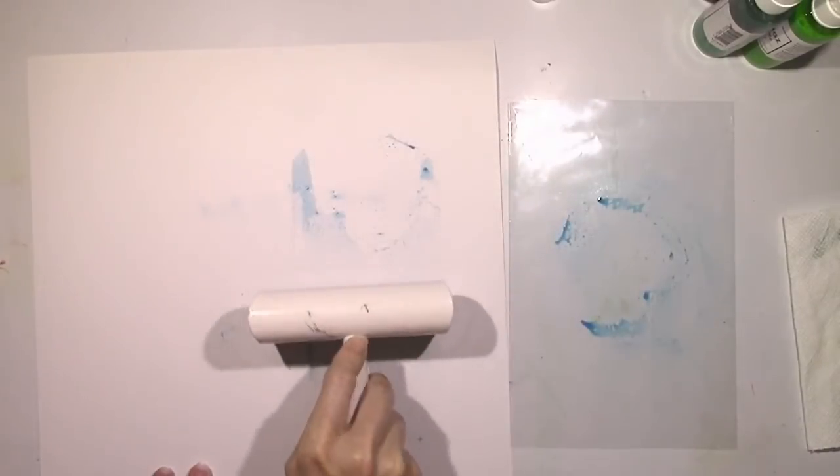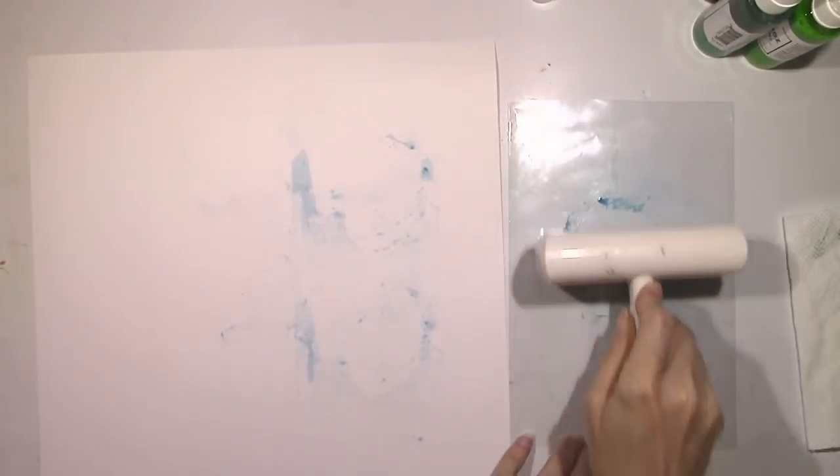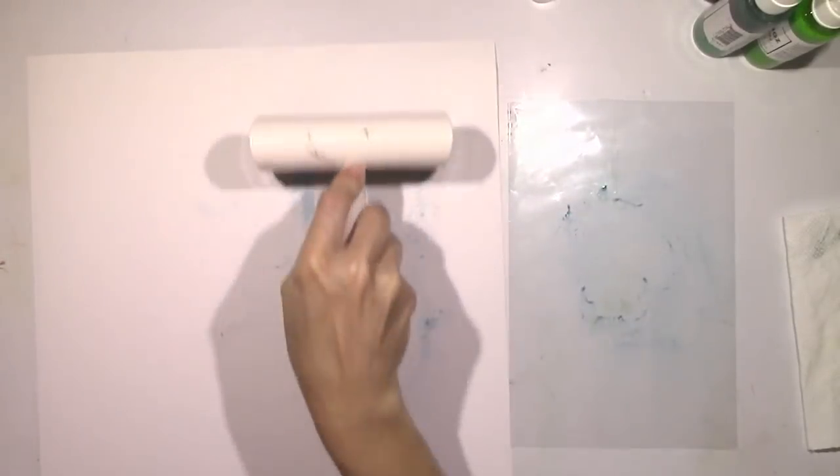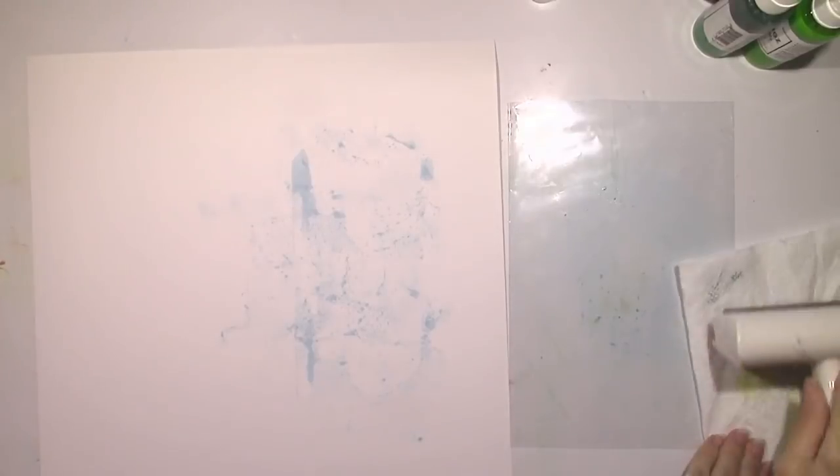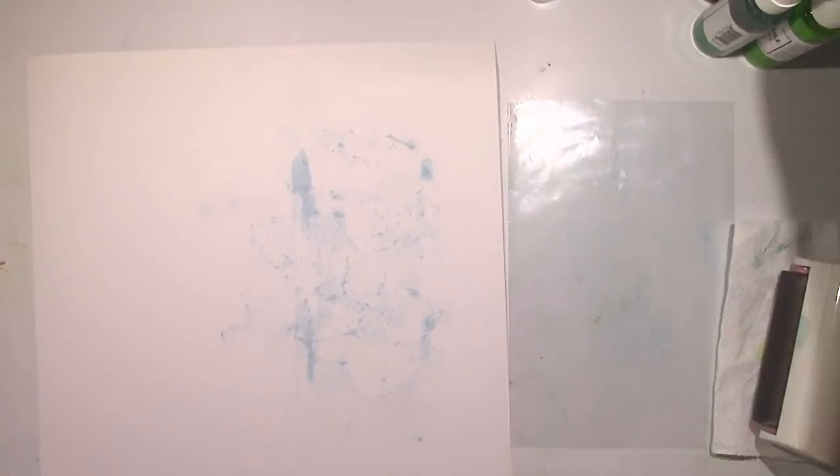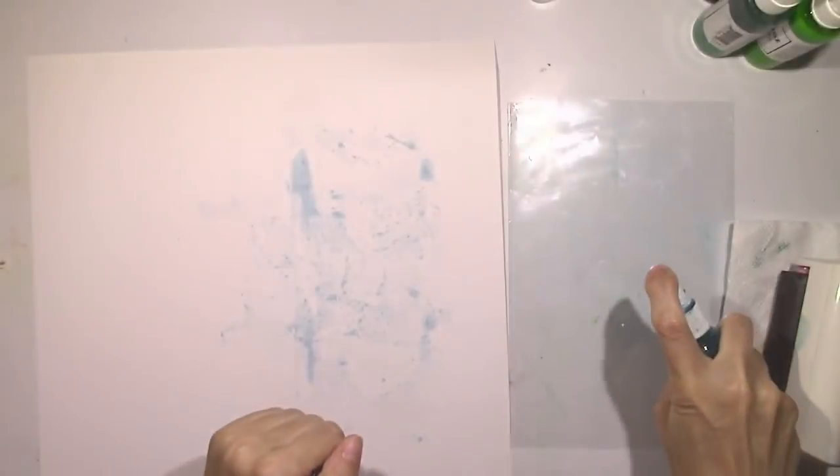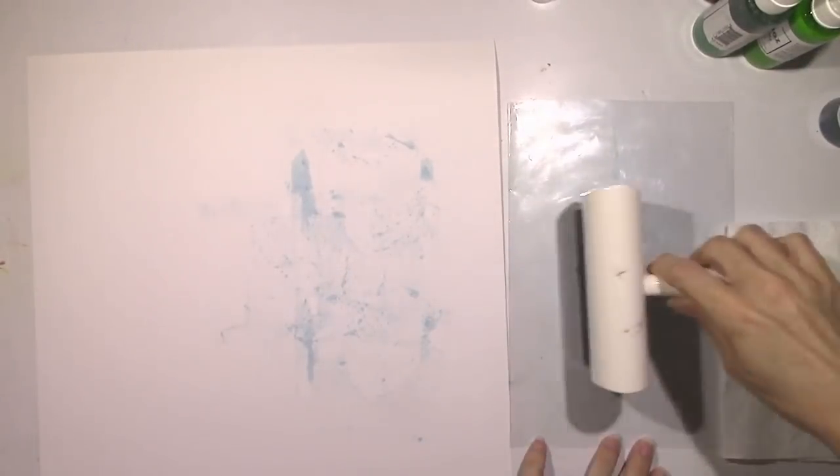Like I said, this is my first time trying this, and you're going to get this really pretty splotchy watercolor effect. I'm going to speed this up because I'm going to go through several colors here. Now you can add as much ink to the brayer as you want or as little and press down harder. You're going to get a different look.